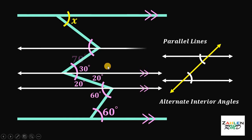For the last time, draw a horizontal line parallel to these four lines. Now if this is 30 degrees, this angle must be 30 degrees because they are alternate interior angles. Since the total measure of this angle is 70 degrees, it follows that the remaining angle must be 40 degrees. Therefore, the value of x must be equal to 40 degrees because they are alternate interior angles.